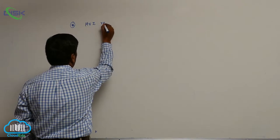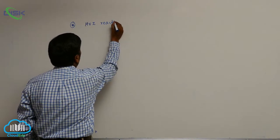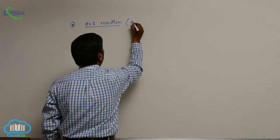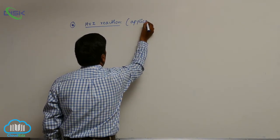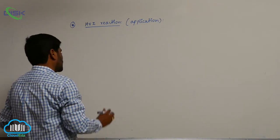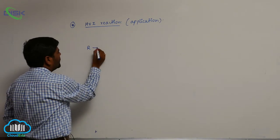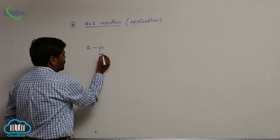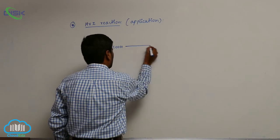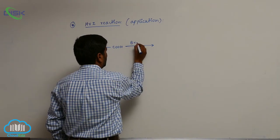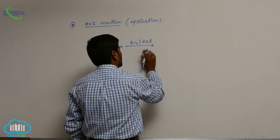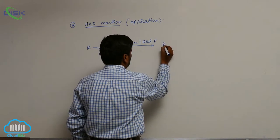HVZ reaction application. This is our CH, here is hydrogen, then COOH. When we react with bromine in presence of red phosphorus, it forms alpha bromocarboxylic acid.